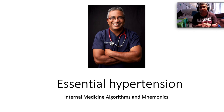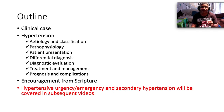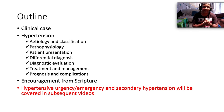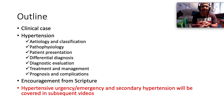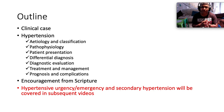Today we are tackling a very common problem in medicine — something which is increasing in prevalence worldwide. We're talking about essential hypertension. We're going to break it down under six main headings: etiology and classification, pathophysiology, patient presentation including signs and symptoms, differential diagnosis, diagnostic evaluation, treatment and management, and prognosis and complications. The topic of hypertension is broad, so hypertensive urgency and emergency will be covered in a separate video — here we focus on essential hypertension.